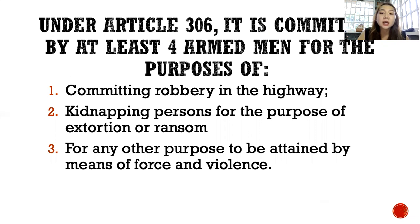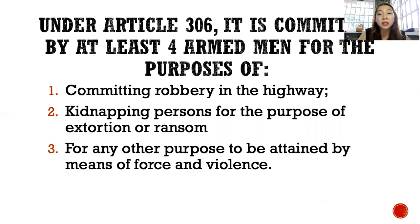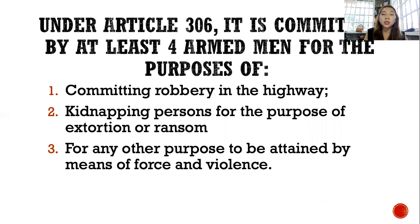In Article 306, there is a predetermined or preconceived victim — they have a specific target. While in PD 532, there is no preconceived victim; it is committed indiscriminately on any person passing on the highway, as long as it is committed on a Philippine highway. Remember that in brigandage under Article 306, the band was formed specifically to be robbers committing any of the mentioned purposes.